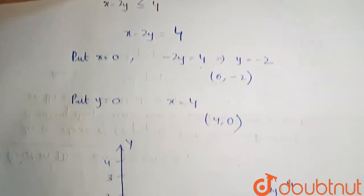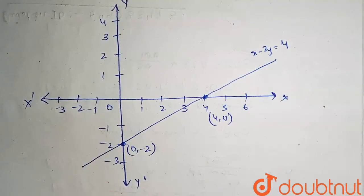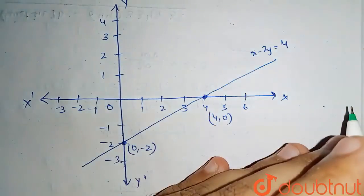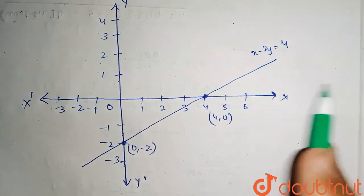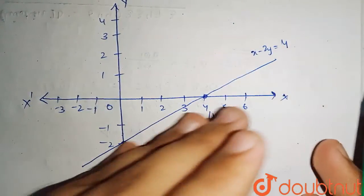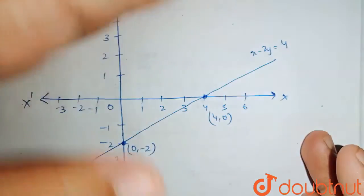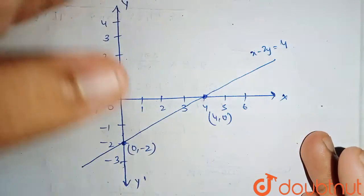So for which part x-2y is less than equals to 4? So we can see that if we move downwards, the value of x-2y increases. As x is also increasing and y is negative, so if we move the negative side, the value will increase. And if we move upwards, the value will decrease. That is, we get the values less than equals to 4.